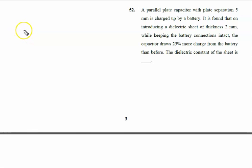A parallel plate capacitor with plate separation 5 mm is charged up by a battery. This is a capacitor. The spacing small d is given to us, that is 5 mm, and it is connected to a battery of any voltage. Let us say the voltage is V.